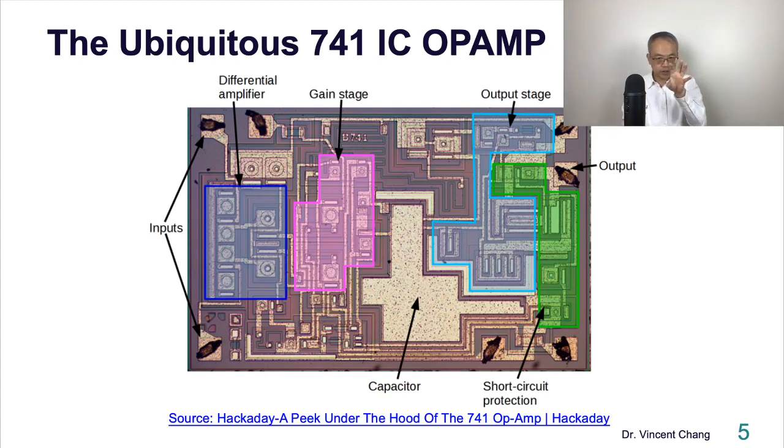On the gain stage, in the gain stage, you see a big capacitor. So how big is that? Usually the typical value of that capacitor is 30 picofarad. What's picofarad? 10 to the negative 12 power. So compared to the discrete circuit amplifier, it's extremely, extremely small.